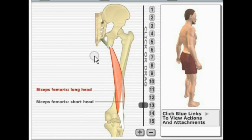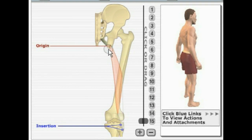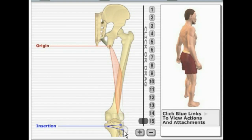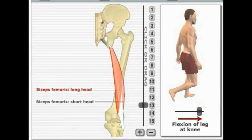Next we'll go to the posterior side and look at the hamstring group. First is the biceps femoris. With the name biceps, it has two heads — a short head and a long head. The long head originates on the ischial tuberosity of the ischium and inserts on the head of the fibula. The short head originates on the linea aspera of the femur and also inserts on the head of the fibula. These muscles are responsible for extension of the thigh and flexion of the leg at the knee — the reverse action of the quadriceps.